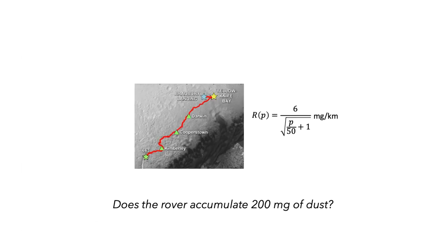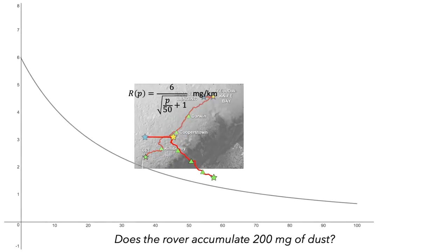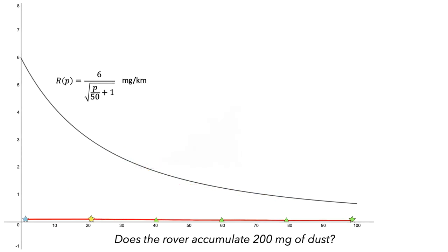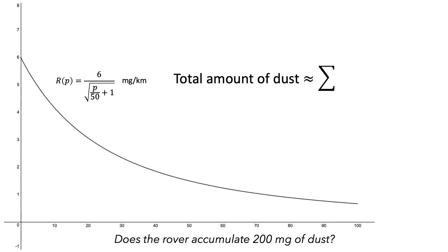To get started, let's look at a graph of the dust accumulation function. To approximate the total amount of dust that accumulates, we'll use a left-hand Riemann sum. To start, we have to divide the 100 kilometers into intervals. We'll start by using intervals that are 10 kilometers long each.